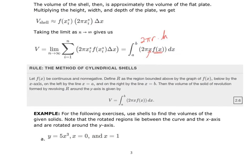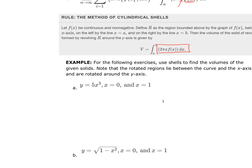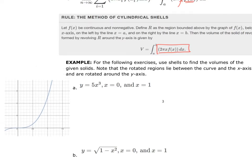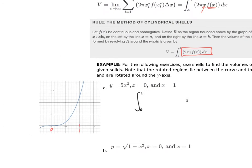If we're revolving around the y-axis, we integrate with respect to x. When determining which way to integrate, it's best to do a quick sketch of each curve. Here I've gone out to Desmos for a better sketch. The graph shows 5x³, and we are going to be integrating between 0 and 1, revolving about the y-axis.